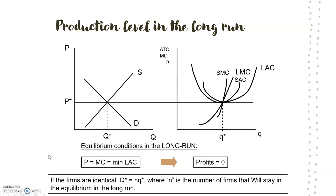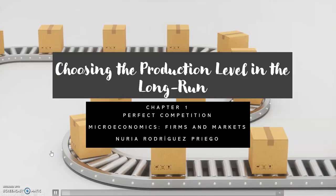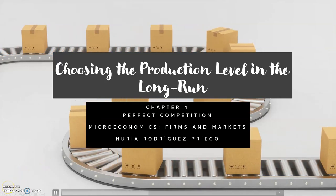If all firms are identical — they all have the same cost function — then the total quantity Q produced in the market equals the number of firms n multiplied by what each company produces q, where n is the number of firms that will remain in the long-run equilibrium. That's all for this video, see you in the next one.